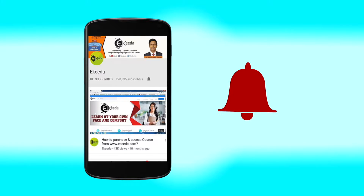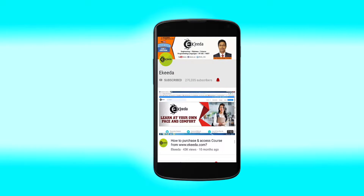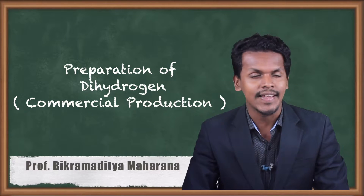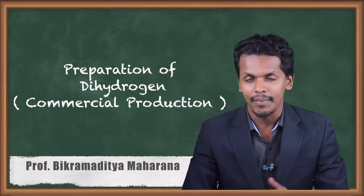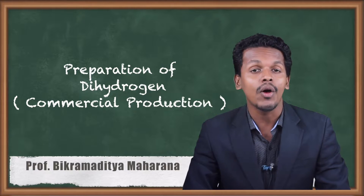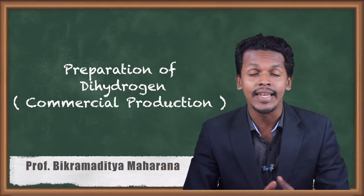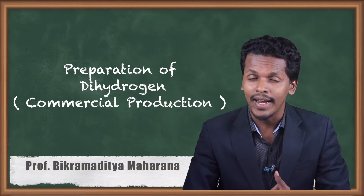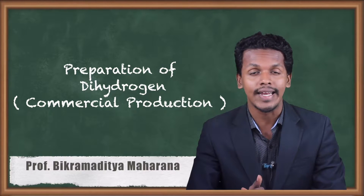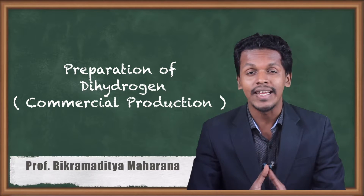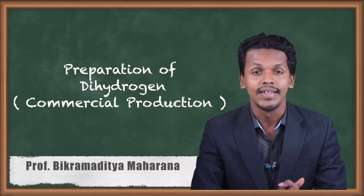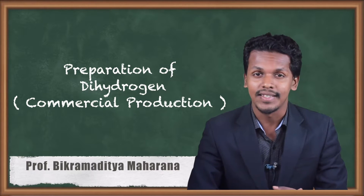Click the bell icon to get the latest videos. Hello friends, in the previous lecture we talked about how hydrogen is prepared in the lab. Now we are going to talk about how hydrogen is prepared in commercial production — there are various methods from which we can obtain hydrogen in large amounts, and that is what we are going to discuss in this chapter.